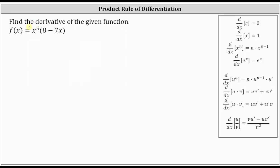Let's first apply the product rule, where we will call the first function u and the second function v. Therefore, f prime of x is equal to u v prime plus v u prime. Notice how I've also given the product rule in a different form here — they are equivalent. Remember, multiplication is commutative, and therefore we can change the order of the product and it does not affect the result. I'm going to use the form: the first function times the derivative of the second function, plus the second function times the derivative of the first function.